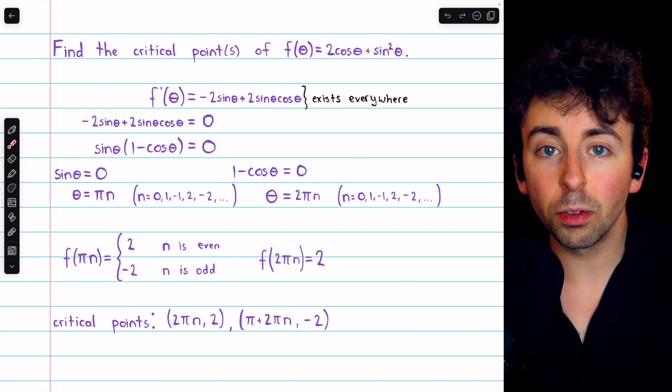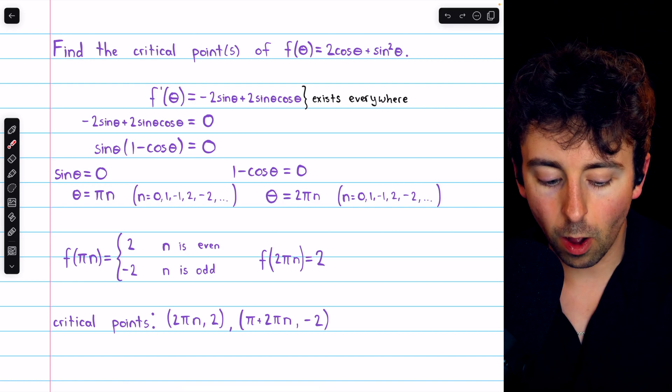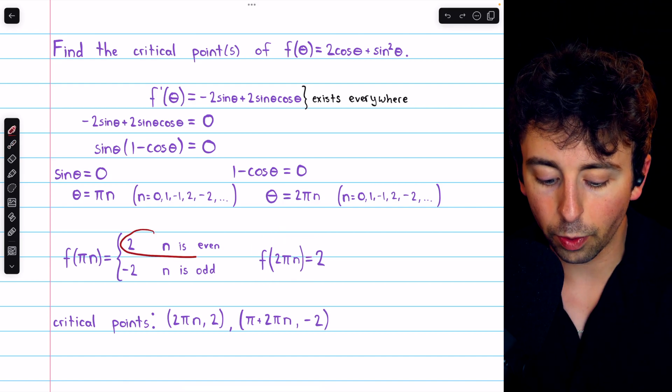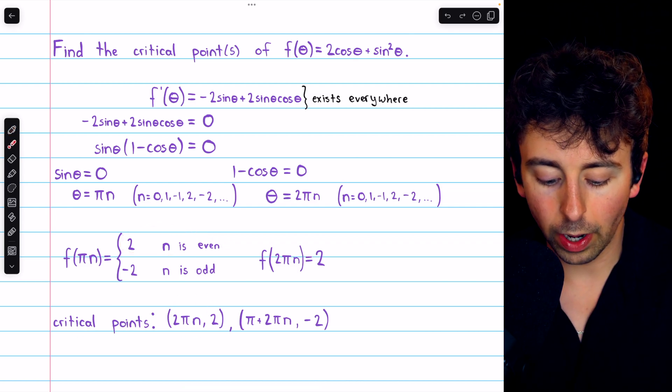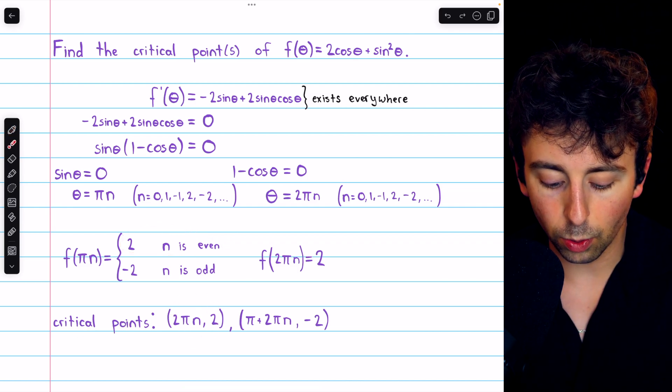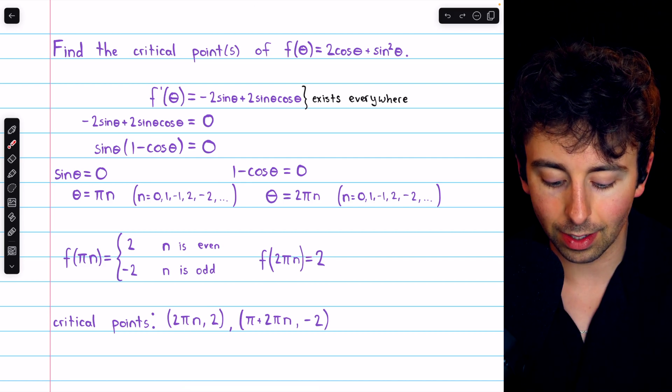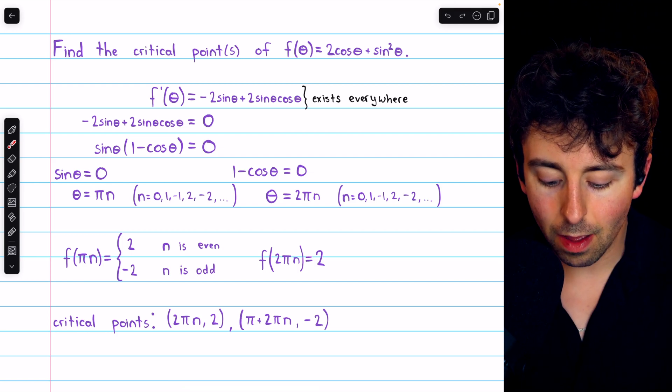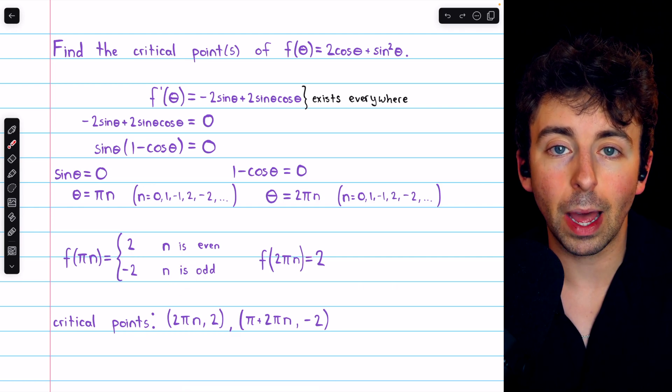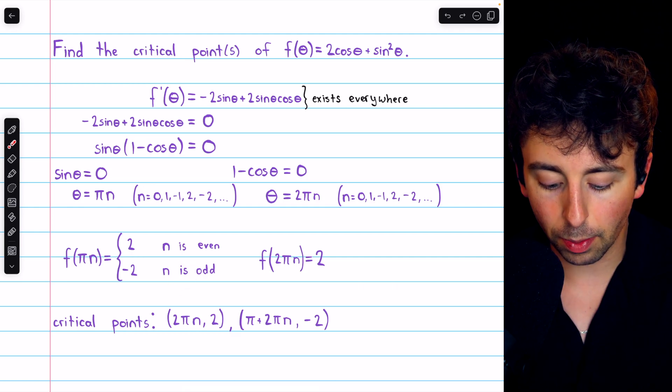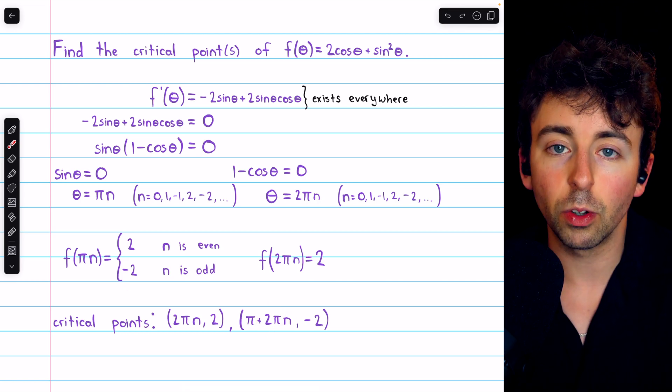And note that 2πn, those are just the even multiples of π. So we actually already captured this behavior of the function over here in the piecewise function. And so we can say that these are our critical points: (2πn, 2). Those are all of the even multiples of π, where the function's output is 2. And then (2πn + π, -2). Those are all of the odd multiples of π. So if we plug in an even multiple, then we'll get 2 as the output. If we plug in an odd multiple, we'll get -2 as the output.